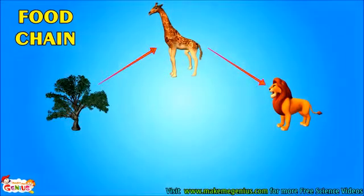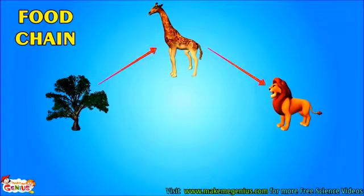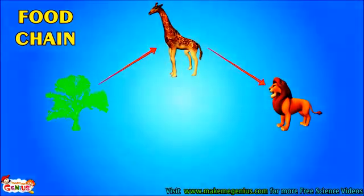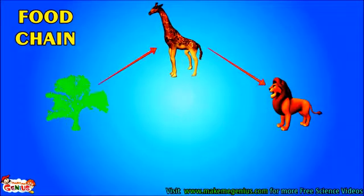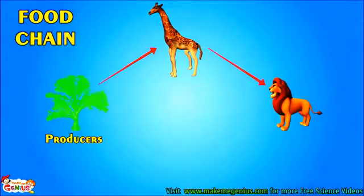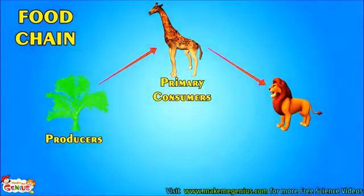So you have seen: plants make their own food, other animals eat plants, and some other animals eat those animals who eat plants. So all are dependent on plants. This is also called the food chain. It starts from plants. In a food chain, plants are known as producers as they produce food. The species who eat plants are called primary consumers.